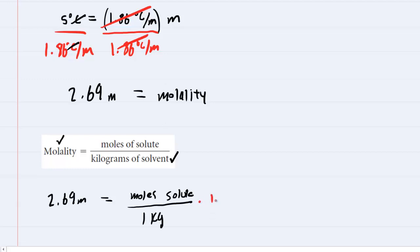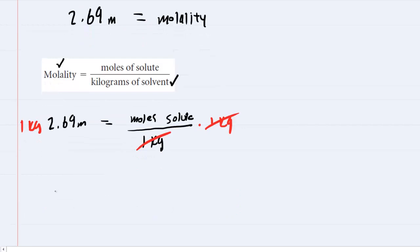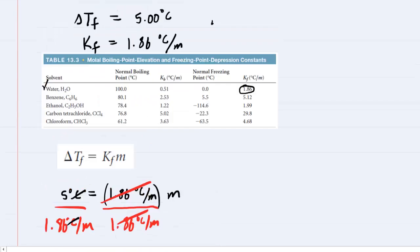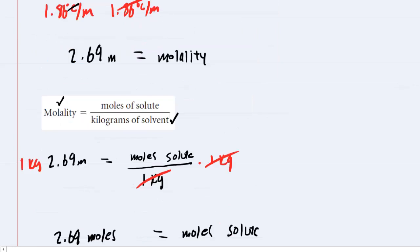Now, this is relatively easy to solve. We just multiply one side by 1 kilogram and the other side by 1 kilogram. We'll cancel out on this side. And we can see that the number of moles of our solute is simply 2.69 moles. Now, the actual solute in this problem is the substance being mixed with water. And that was the ethylene glycol, C2H6O2. So we can write the formula C2H6O2 down here.